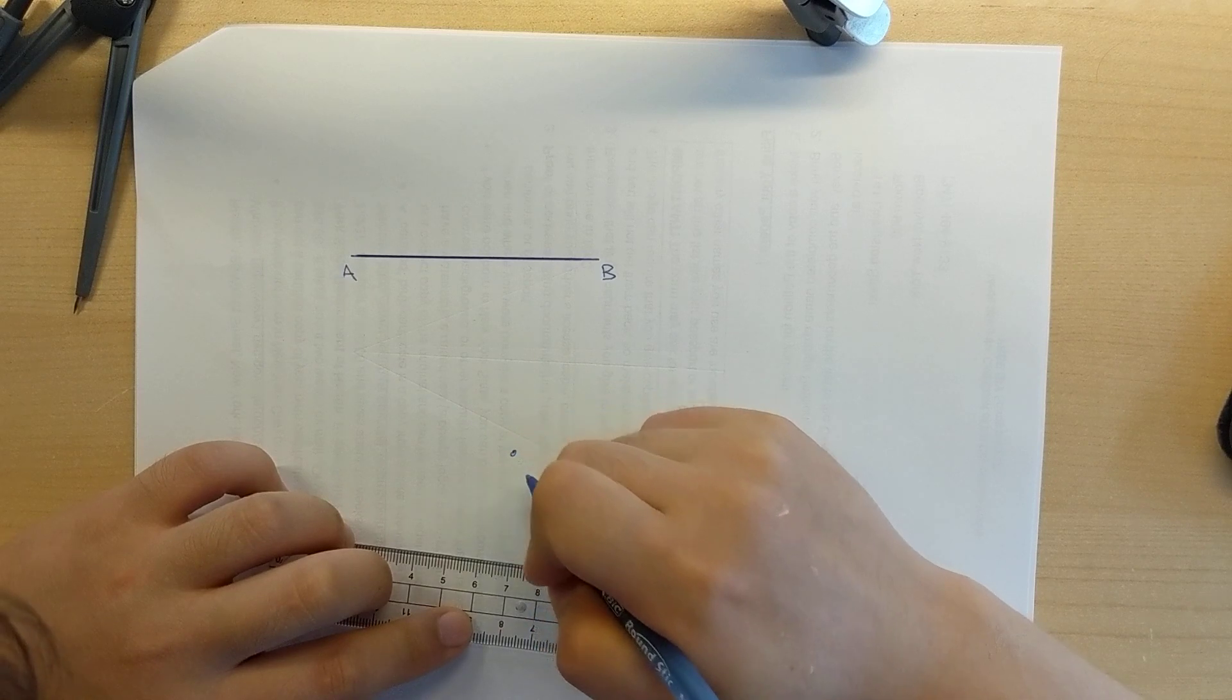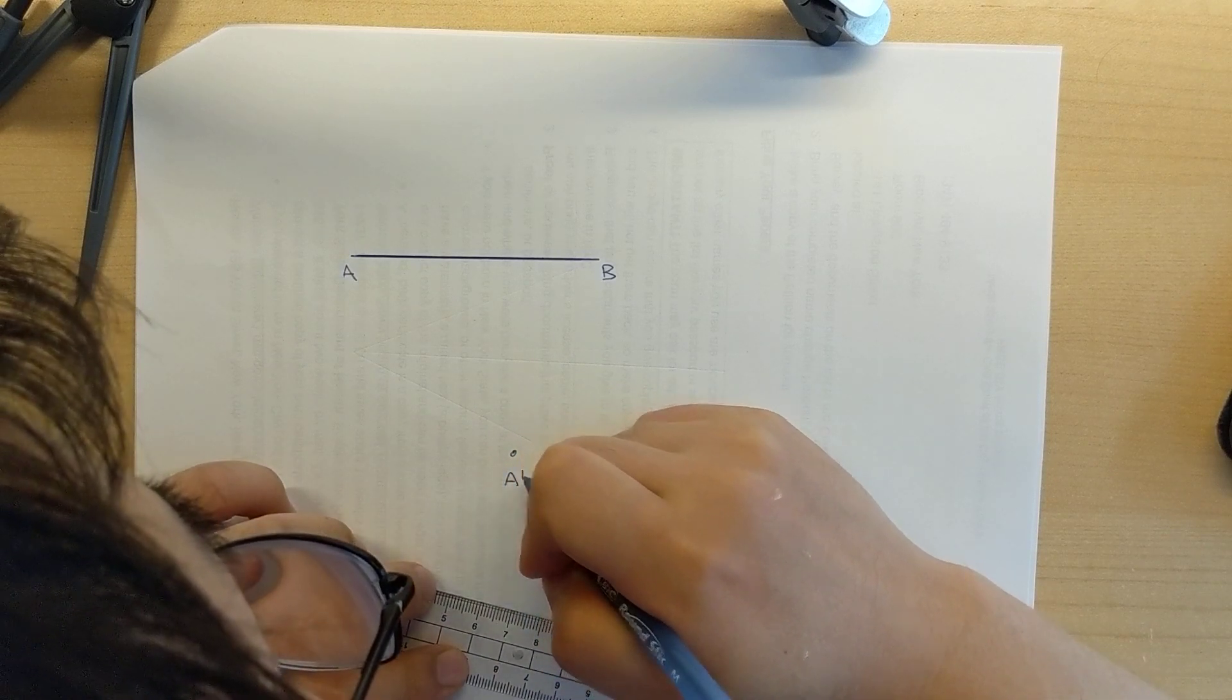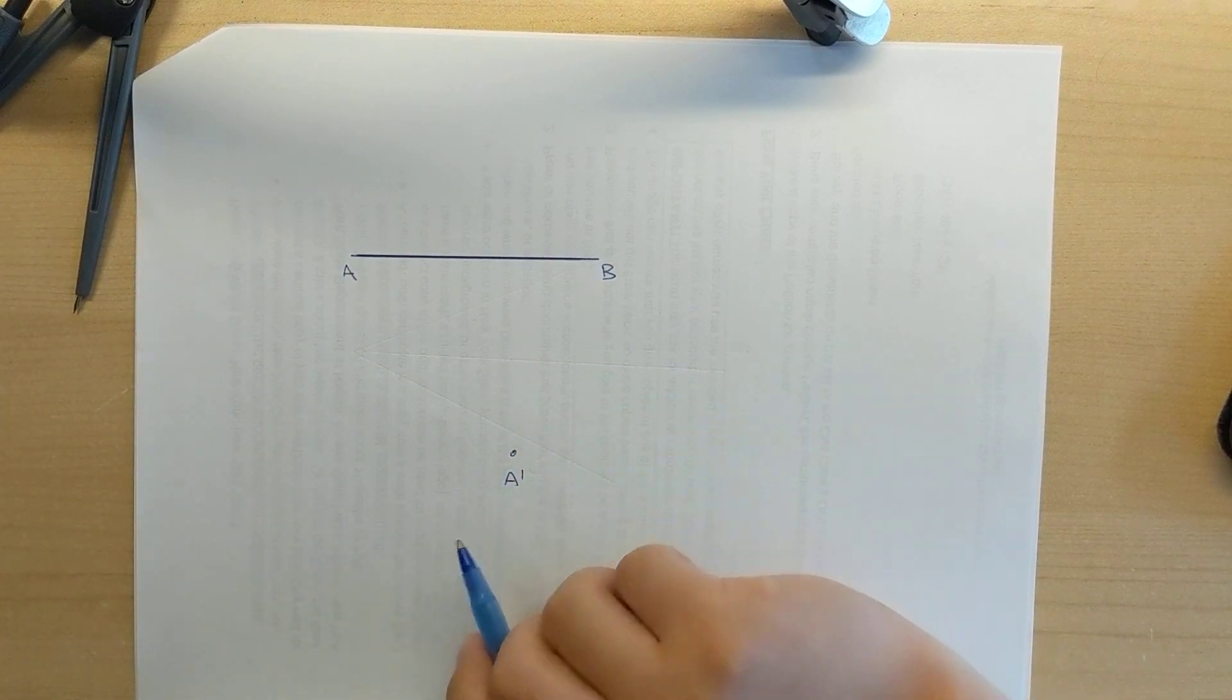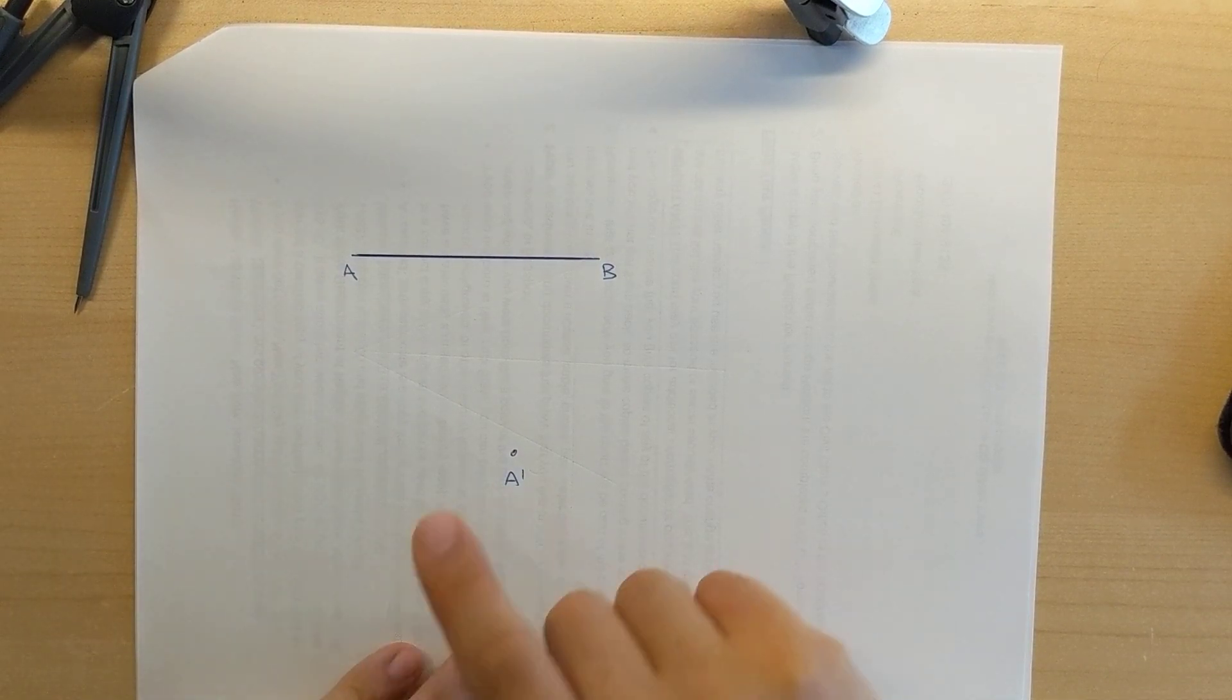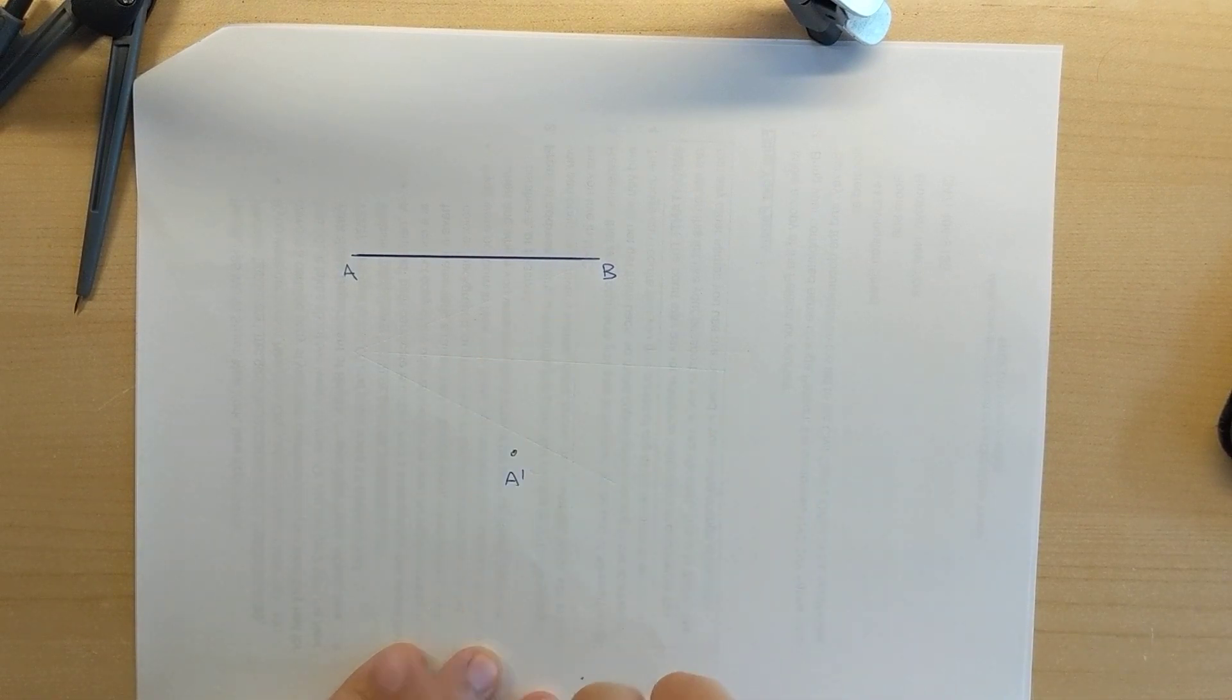I'm going to call this point over here A prime. So I want to place or I want to copy line segment AB so that this line segment will begin at A prime here.